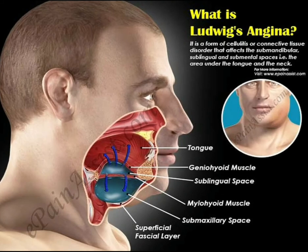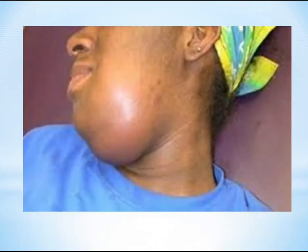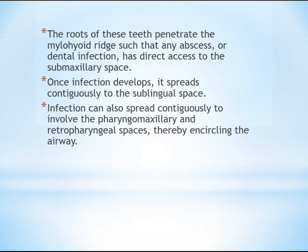This diagram shows the mylohyoid muscle separating the spaces. The submaxillary space is beneath the mylohyoid muscle, and on top we have the sublingual space. This example shows a patient with Ludwig's angina, where the roots of the teeth penetrate the mylohyoid ridge such that any abscess or dental infection has direct access to the submaxillary space.